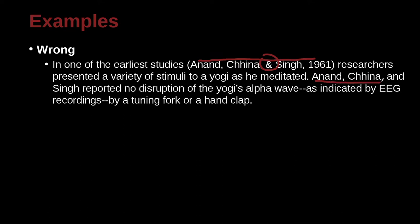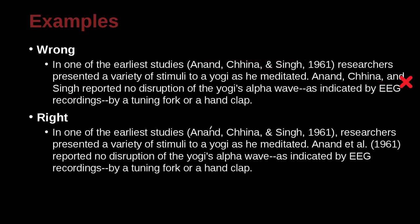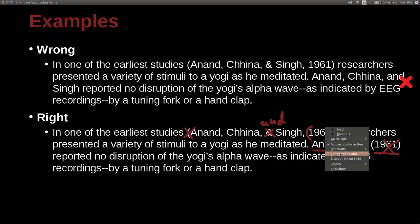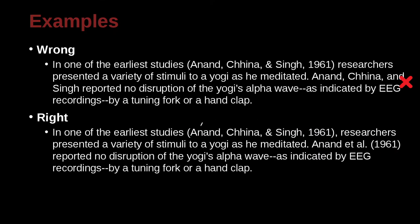Then we have the same paper cited again. Do you remember the special rule that applies? The first time we list the authors, we list them all, but the second time we can use 'et al.' because it's three or more authors. We also have the date. Why do we have the date if it's in the same paragraph? Remember, if the authors are outside the parentheses, you cannot use the ampersand — you must use 'and.' In that case, we would not need the date anymore. But in this situation, we have multiple authors — three or more — so we use 'et al.'